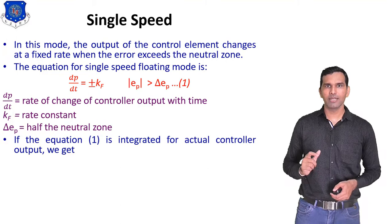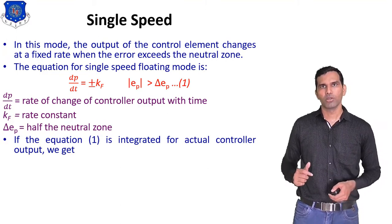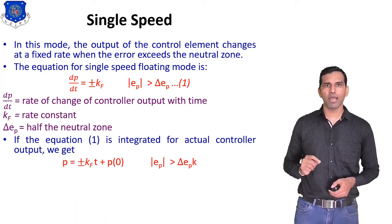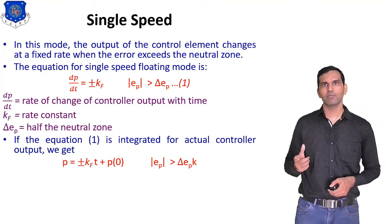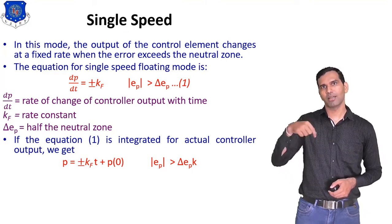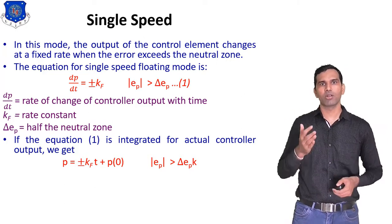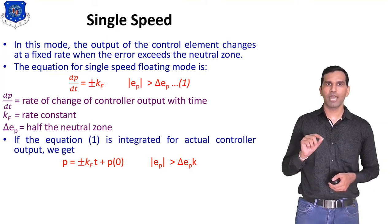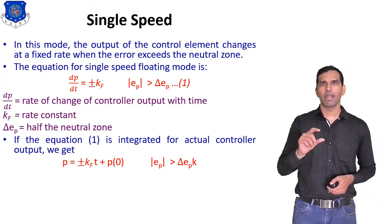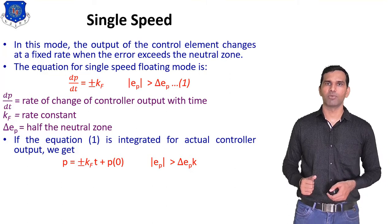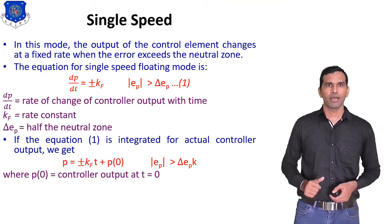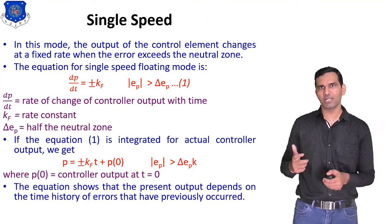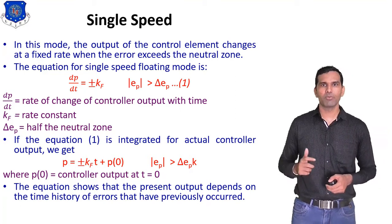If equation one is integrated for the actual controller output, we get: p = ±Kf·t + p₀, where p₀ is the output at time zero. Using standard derivation and integration, dp/dt integrated gives p, and Kf·t plus constant p₀. This equation shows that the present output depends on the time history of errors that have previously occurred.